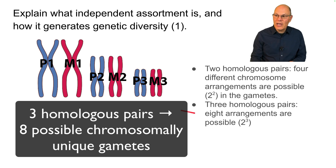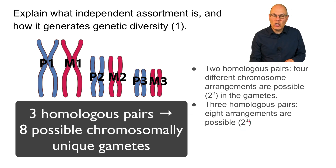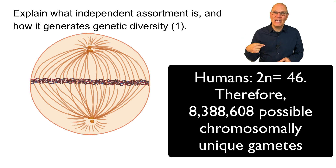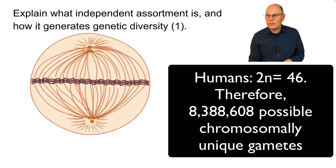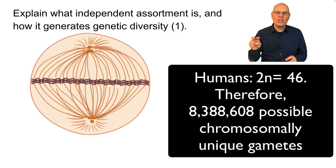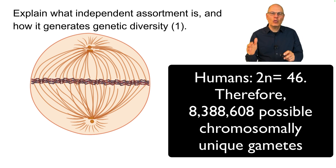With three homologous pairs, the math takes you to 2 cubed — that's eight possible arrangements. And with 23 pairs, like we have in Homo sapiens, you have 2 to the 23rd possible arrangements. That's 8,388,608 possible combinations — the chance that any two sperm cells or any two egg cells would have exactly the same array of maternal and paternal chromosomes.